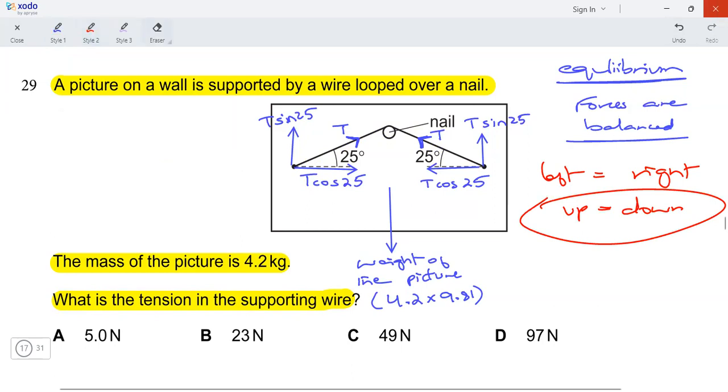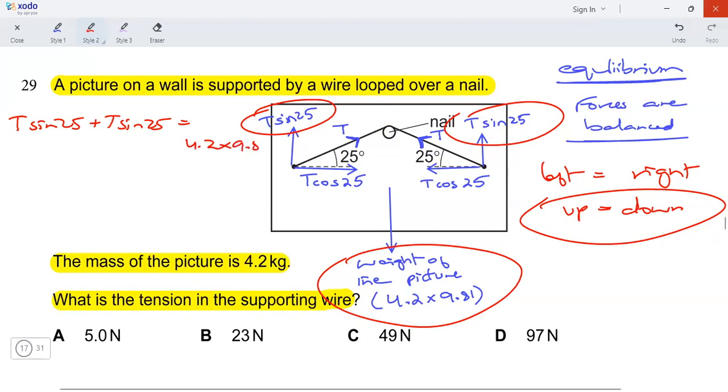So what are the up and down forces? T sine 25, T sine 25 up, and the weight is acting down. So I can make an equation. T sine 25 plus T sine 25 is equal to the weight of the pitcher, which is 4.2 multiplied by 9.81.